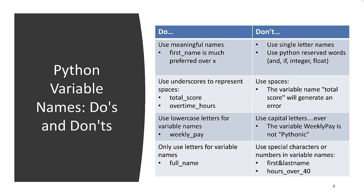Use underscores frequently in Python — there's a concept called Pythonic, meaning consistent with the spirit of how Python was meant to be used. Underscores are important in Python variable names and replace spaces. Do not use spaces in variable names — if you use a space, it will explicitly generate an error. For example, "total score" with a space is not a valid variable name. Also, Python loves lowercase letters — do not use capital letters in your variable names. Organizations that use Python will enforce this rule. So weekly_pay is correct, while weeklyPay is not considered Pythonic.